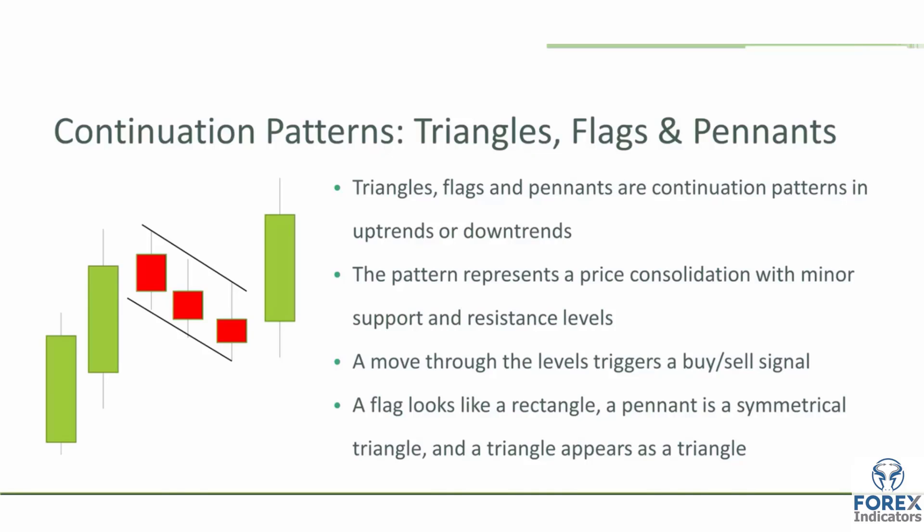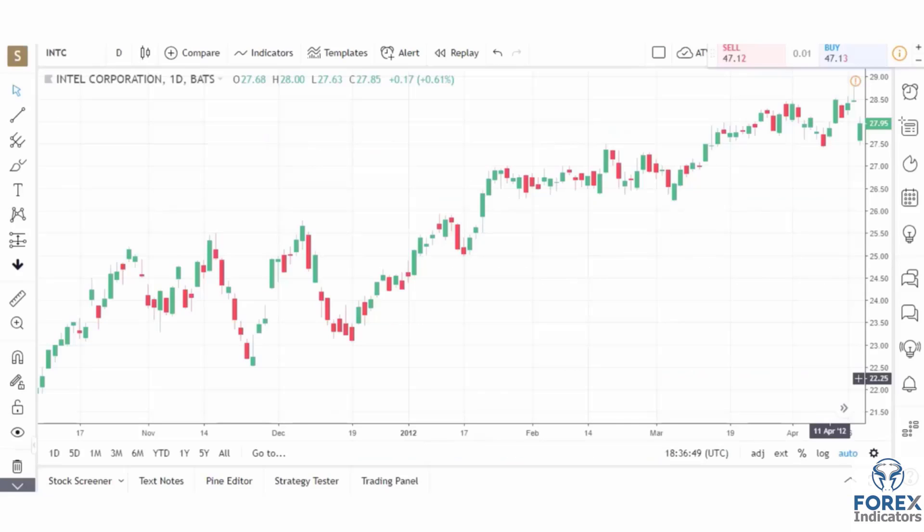A flag, which is represented here on the graph, looks like a rectangle. A pennant looks like a symmetrical triangle, and a triangle looks like a triangle on the chart. We can have both ascending and descending triangles. So let's take a look at triangles, flags, and pennants on the chart.